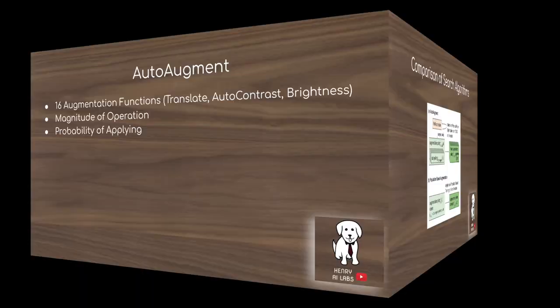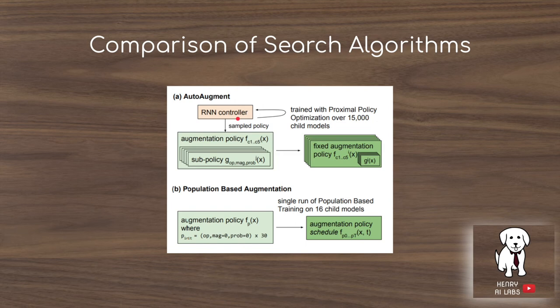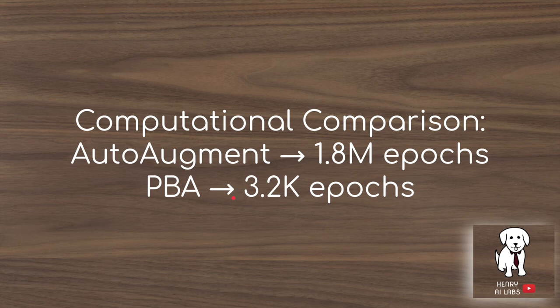AutoAugment is really computationally exhaustive. It's trained with proximal policy optimization over 15,000 child models, where there's an RNN that's trained and child networks that are evaluated. The computational comparison is stark: AutoAugment takes 1.8 million epochs, whereas population-based augmentation only takes 3.2 thousand.